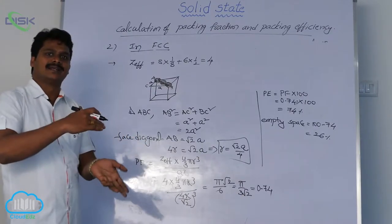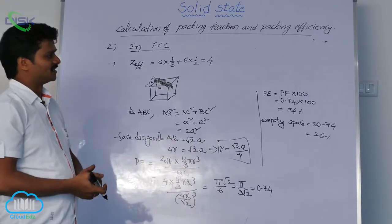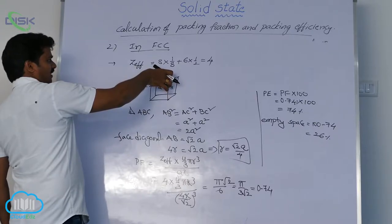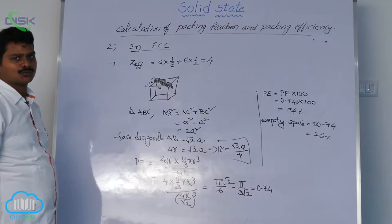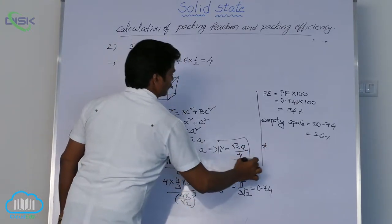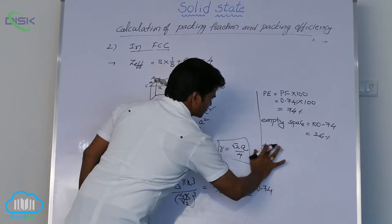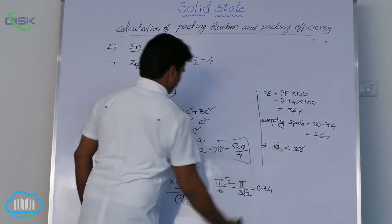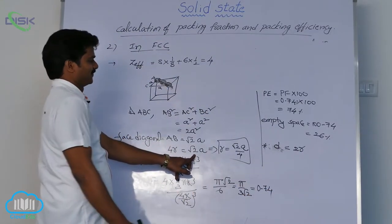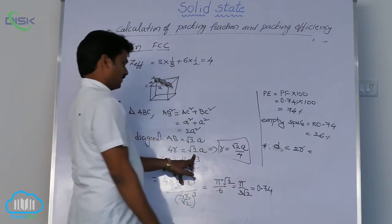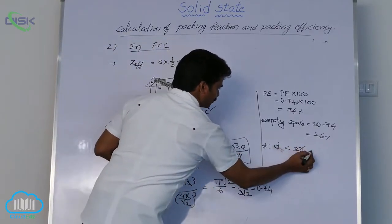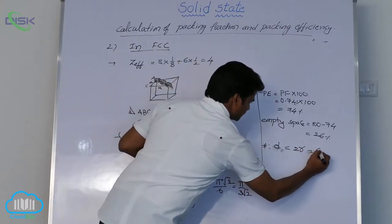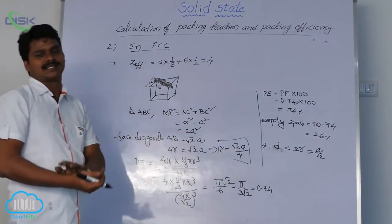Sometimes in problems, nearest neighbour distance will be asked. Nearest neighbour distance means 2R. We have 4R equals root 2A, so dividing both sides by 2, 2R equals root 2A divided by 2, which equals A divided by root 2. So the nearest neighbour distance in FCC is D equals A divided by root 2.